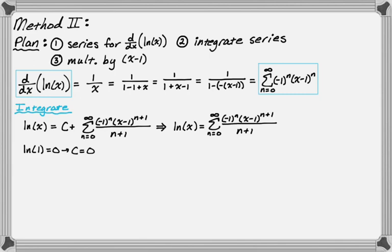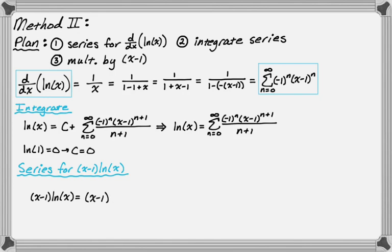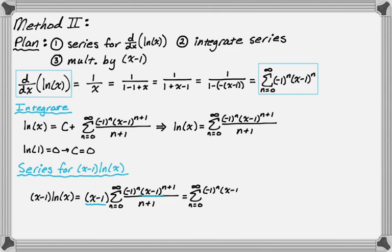Now I'll multiply this series by (x minus 1) to get the series for (x minus 1) times natural log of x. Bringing (x minus 1) inside the summation, I end up with the sum from zero to infinity of negative one to the n times (x minus 1) to the n plus two, all over n plus one. That's what Method 2 gives.